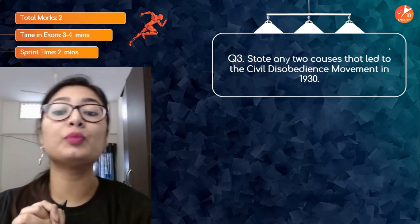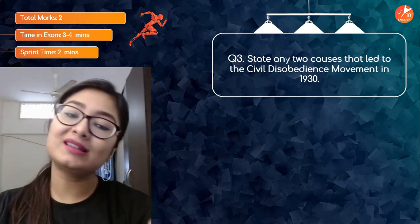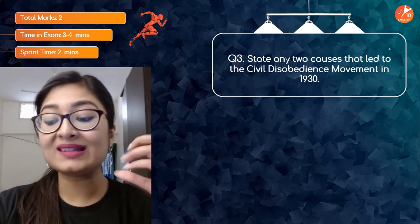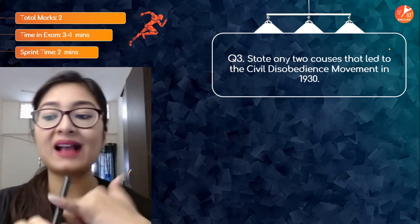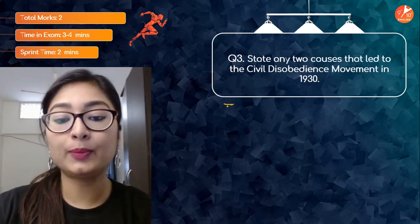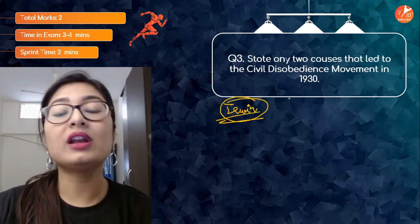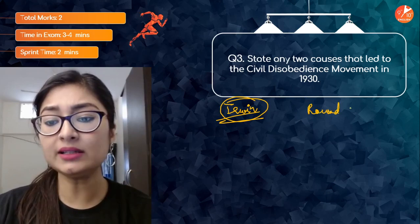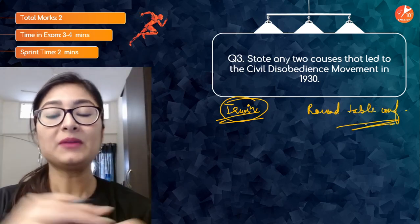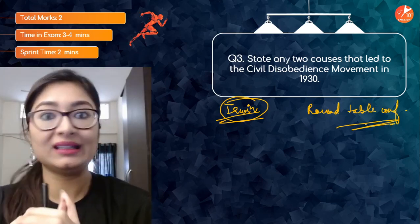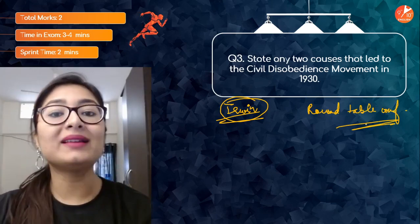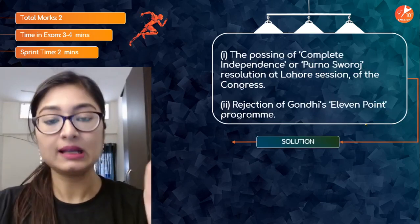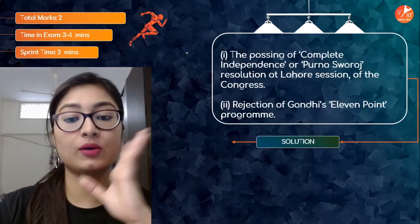State any two causes that led to the Civil Disobedience Movement in 1930. There were multiple causes. First, the Non-Cooperation Movement had failed, paving the way for CDM. The salt tax was not abolished — Lord Irwin had promised things but not followed his word. He had invited leaders for Round Table Conferences, but it was time wastage, and they had started arresting nationalists. By the time Gandhi ji came back, he felt it was all a lie.